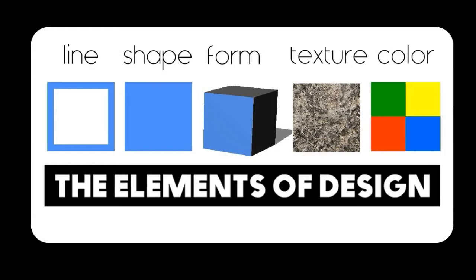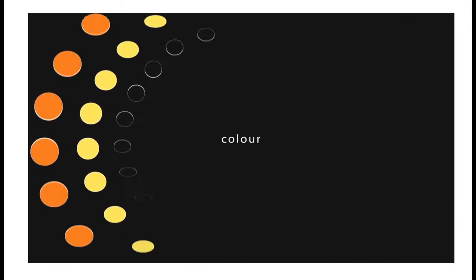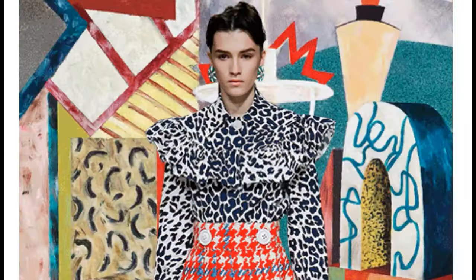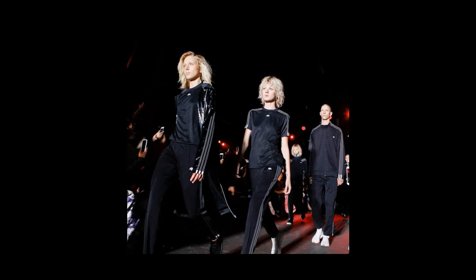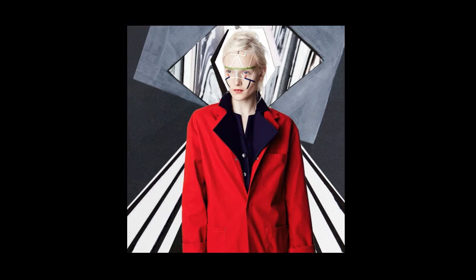In this chapter we are going to learn about the elements of design. Any design in the world can be broken down into five elements: line, shape, form, texture, and color. Elements of design serve as a foundation for the development and creation of all textiles and clothing products. Throughout history, artisans and designers have utilized the elements of design in a variety of ways to create a certain aesthetic.